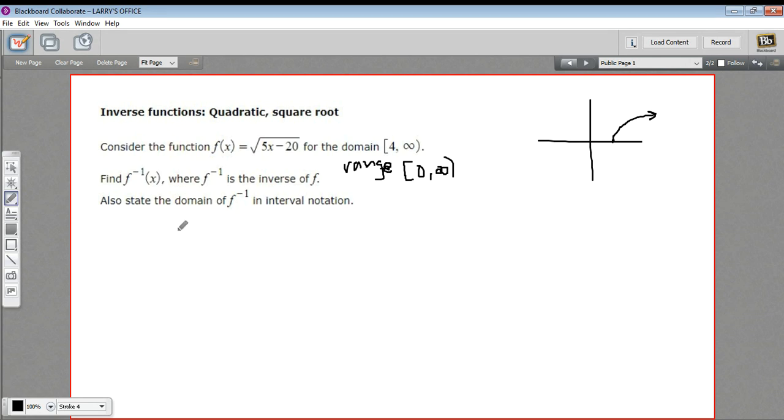To find the actual inverse function, we're going to replace f(x) with y in the original function and write this as y equals the square root of 5x minus 20. Then we do what I call pulling the switcheroo. We swap the x and the y, so we get x equals the square root of 5y minus 20. And then we need to solve for y.